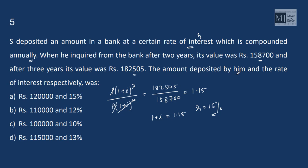We get 1 plus I is 1.15. That means interest rate is 15%. Find the amount deposited by him and the rate of interest. Rate of interest is 15% and it only fits in with option A. Let's check whether the principal is 1,20,000 or not. On dividing, we will get 1,20,000. So option A fits in.